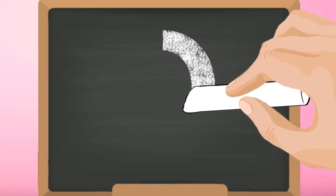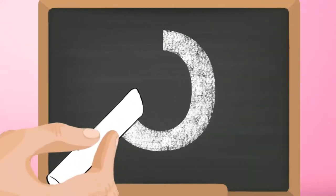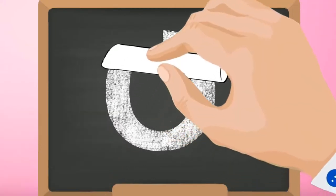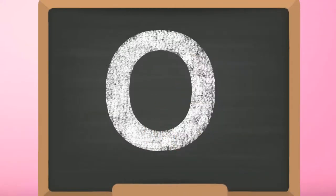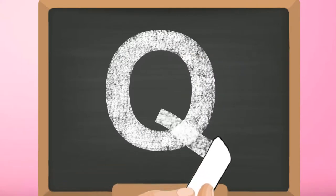Start from the top and make the capital letter O. Then from inside the O, make a slanting line to the right reaching the bottom.